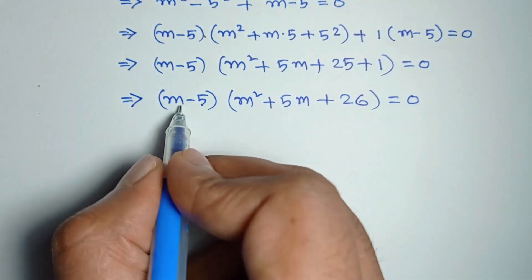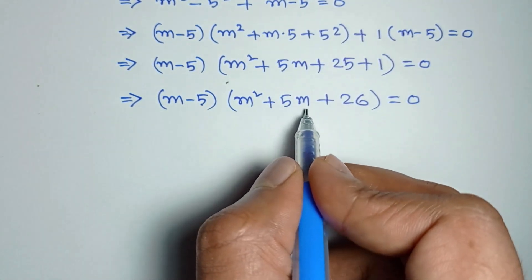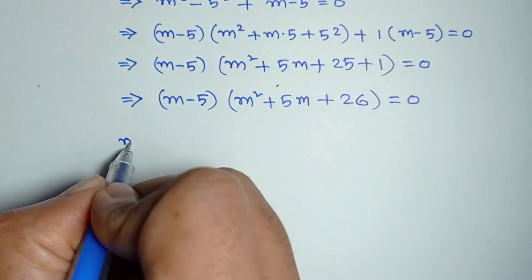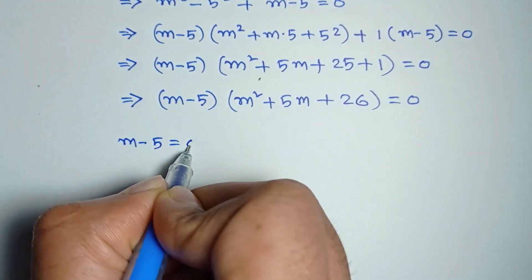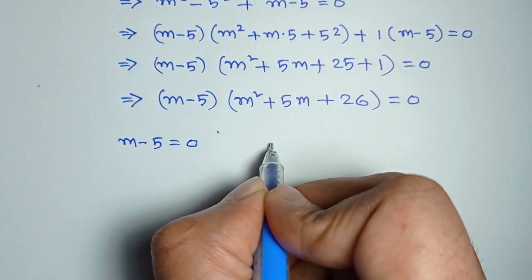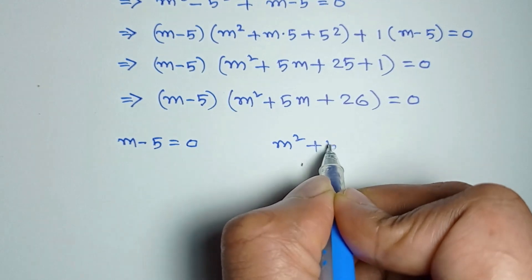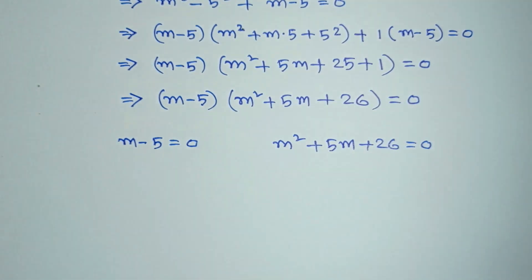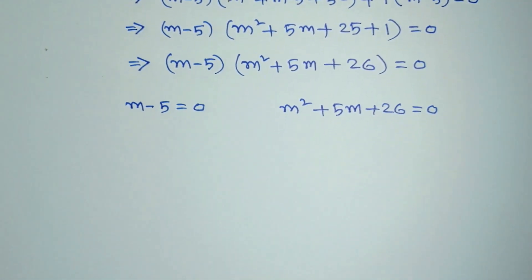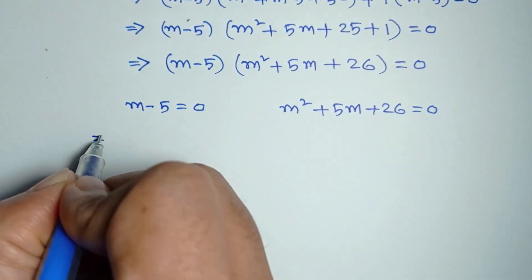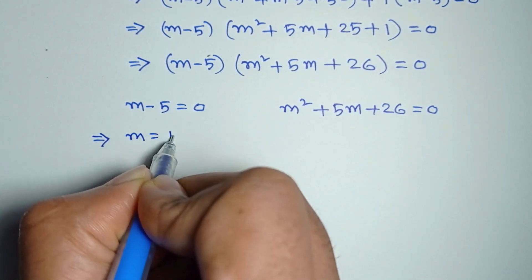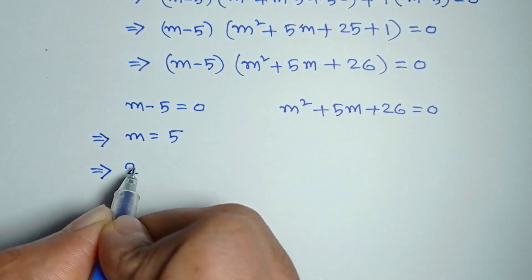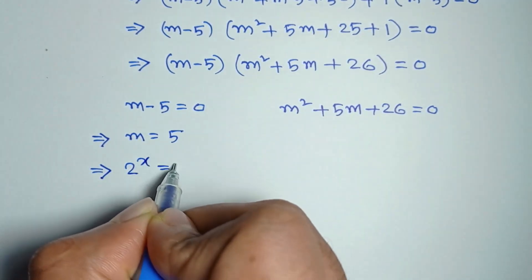So we can write m minus 5 is equal to 0, or m squared plus 5m plus 26 is equal to 0. From the first factor, m is equal to 5. Substituting back, 2 to the power x is equal to 5.